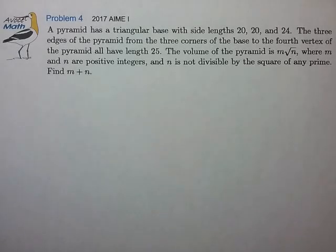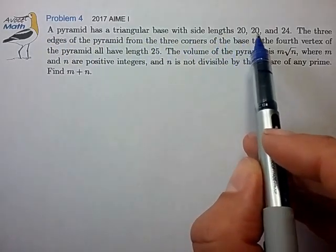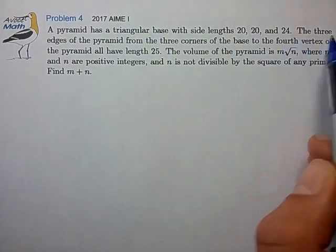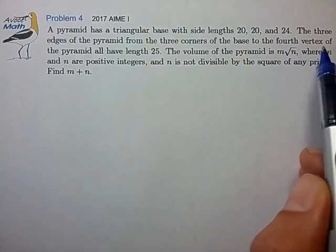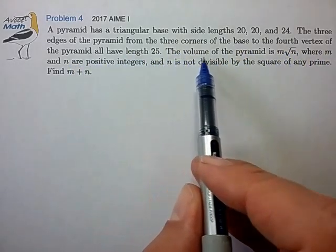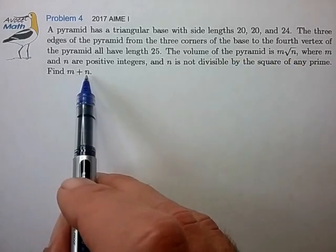Hi, this is problem 4 from the 2017 AIME I. A pyramid has a triangular base with side lengths 20, 20, and 24, and the three edges of the pyramid from the three corners of the base to the fourth vertex all have length 25. The volume of the pyramid is m root n. Find the sum m plus n.